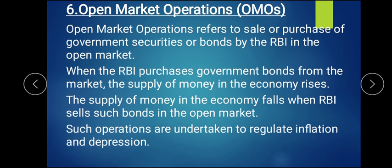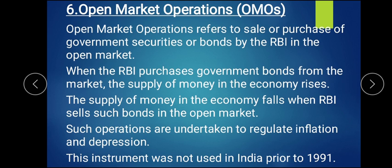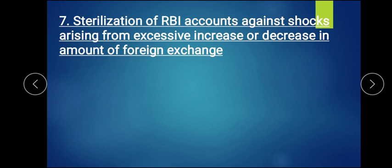When RBI sells government bonds in the open market, money flows to RBI and supply of money in the economy reduces. Such open market operations are undertaken to address inflation and depression. OMO was not used before 1991; it came into use after the 1991 industrial policy when foreign companies started investing and more money was required, allowing RBI to maintain control over the money market.